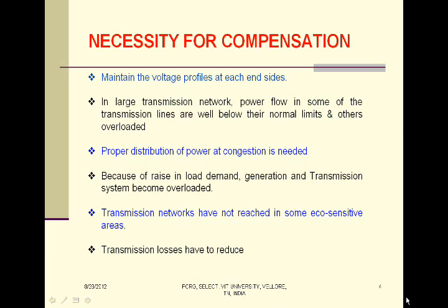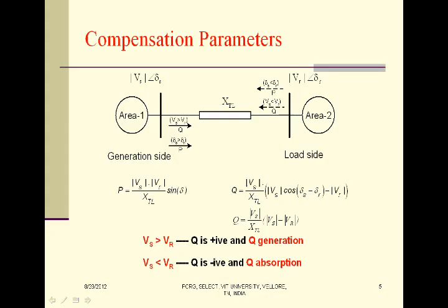Compensators are used to regulate the real and reactive power flow in the system. Consider a two-area system with sending-end voltage Vs and receiving-end voltage Vr, and phase angles dels and delr. With this two-area system, we can frame the real and reactive power flow equations. The real power flow can be controlled by three parameters: voltage magnitude, phase angle, and transmission line reactance. But voltage magnitude and phase angle have some limits and we can't control them to a great extent. So one key parameter we have to control the real power flow is the transmission line reactance. If we increase the transmission line reactance, the power flow will be reduced. If we reduce the transmission line reactance, power flow in the transmission line can be increased.